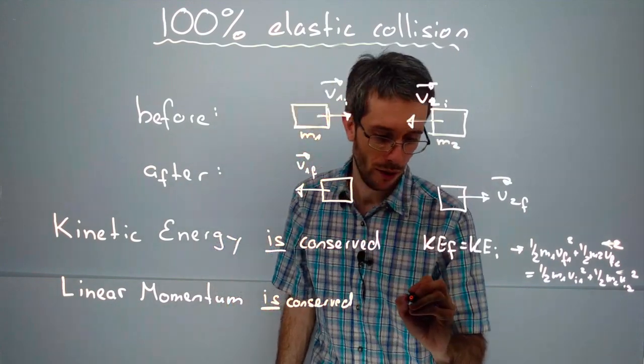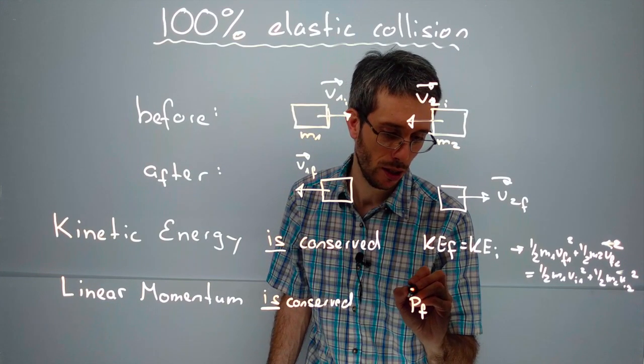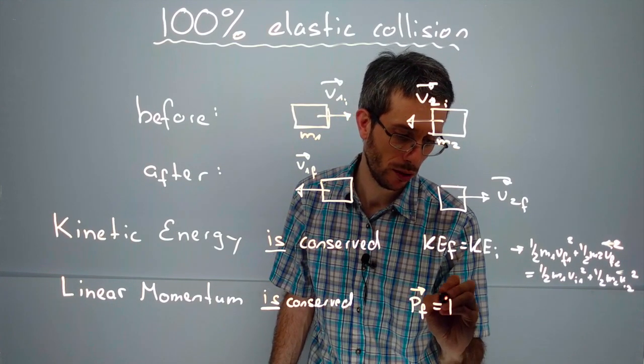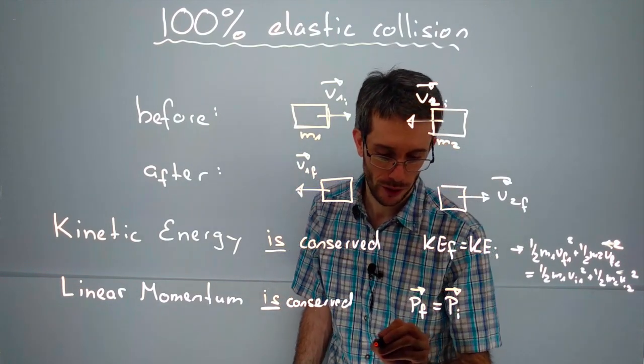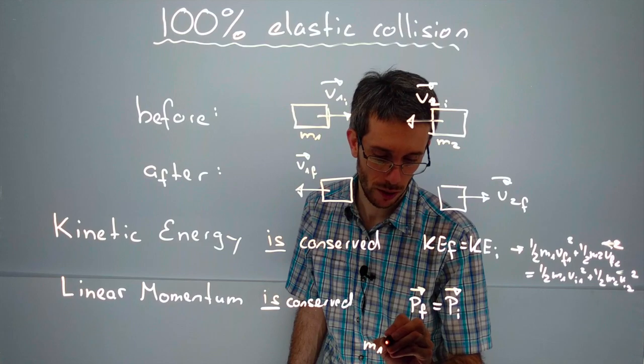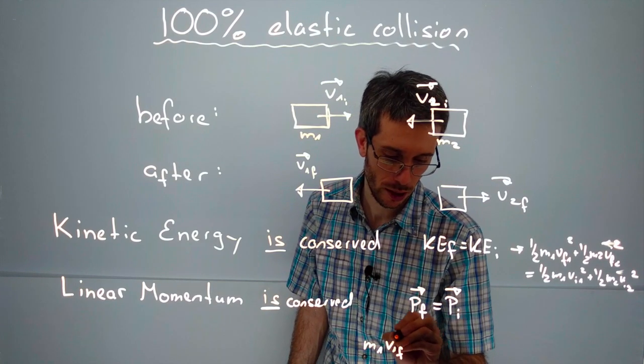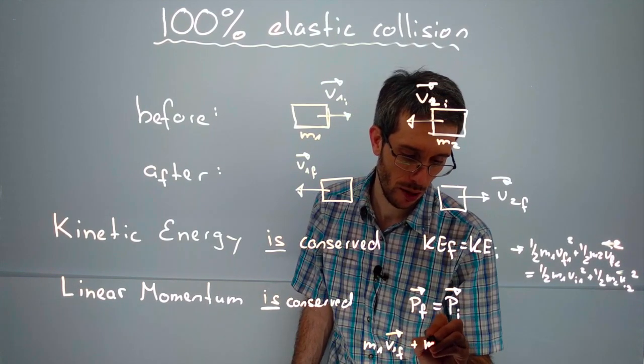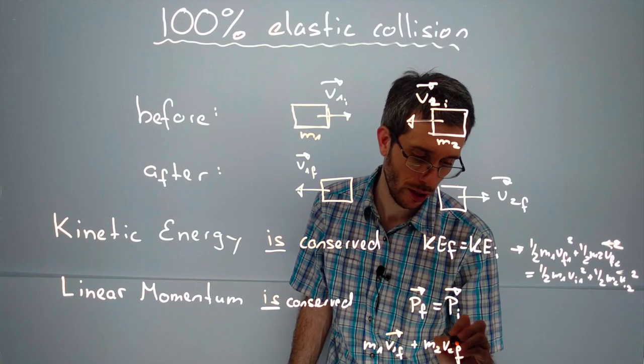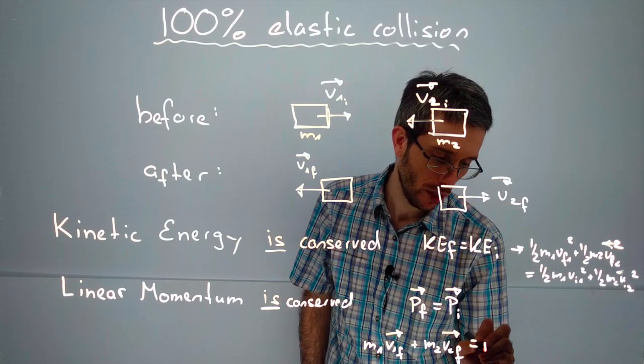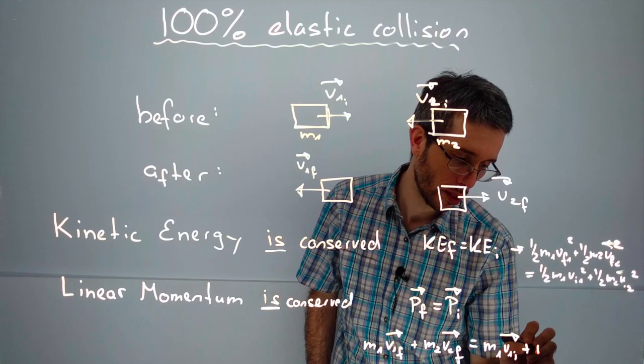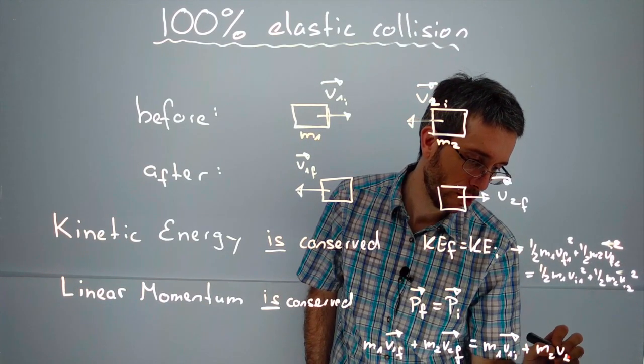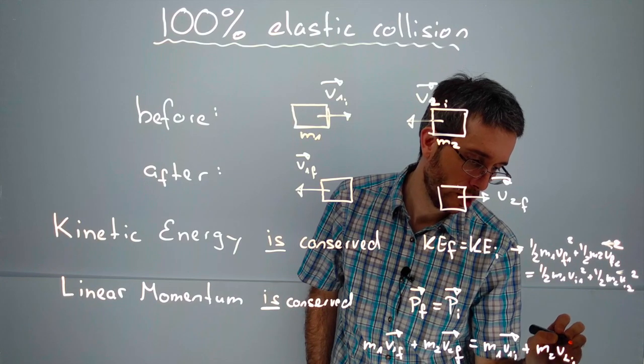So we have final momentum is equal to the initial momentum. So we have m1v final vector plus m2v final vector is equal to m1v initial vector plus m2v initial vector.